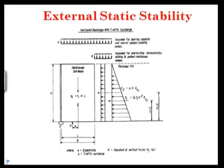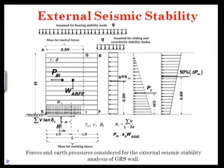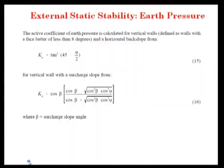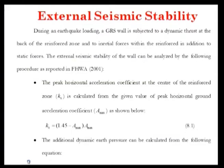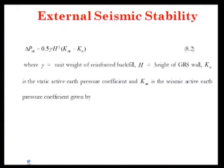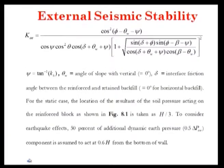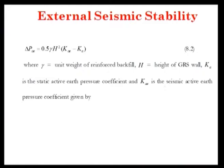The horizontal resisting forces and horizontal driving forces are identified: driving forces come from lateral earth pressure. For external seismic stability, the peak horizontal oscillation coefficient is found, then the additional dynamic earth pressure is calculated as 0.5·γ·H²·(Kae - Ka), from which Kae, the seismic active earth pressure coefficient, can be determined.